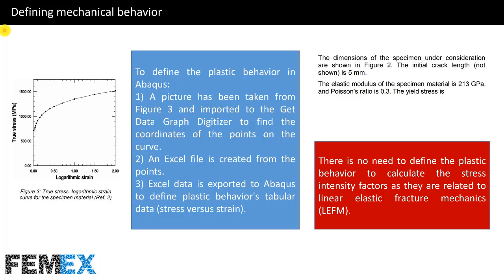Now I want to talk about defining mechanical behavior. The curve of true stress versus logarithmic strain is illustrated in the reference paper. The initial crack length is 5 mm. The elastic modulus of the specimen material is 213 GPa and Poisson's ratio is 0.3. To define the plastic behavior in Abaqus, a picture was taken from figure 3 and imported to the GetDataGraphDigitizer to find the coordinates of the points on the curve. An Excel file is created from the points and then exported to Abaqus to define the plastic behavior's tabular data. There is no need to define plastic behavior to calculate the stress intensity factors as they are related to linear elastic fracture mechanics.